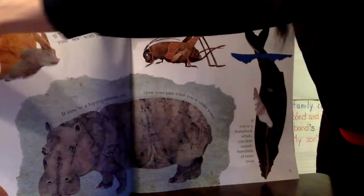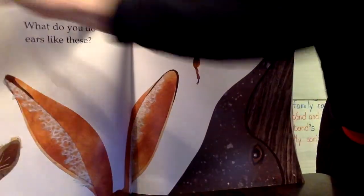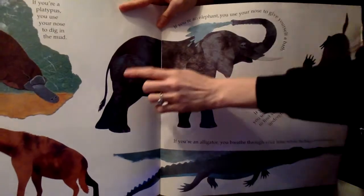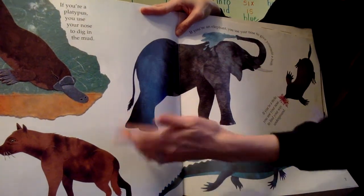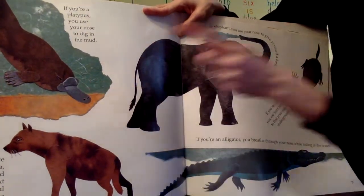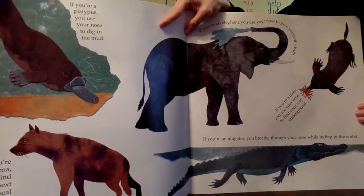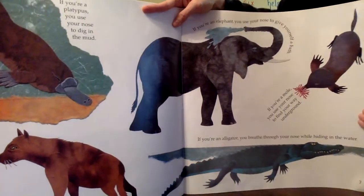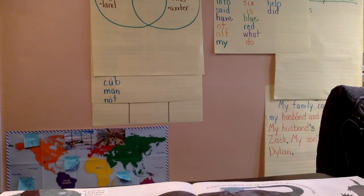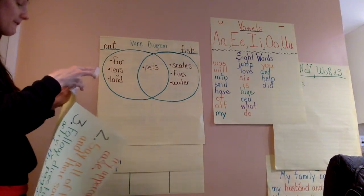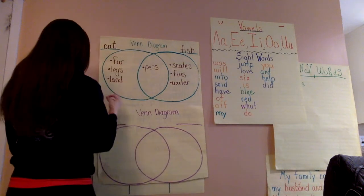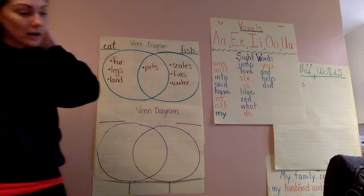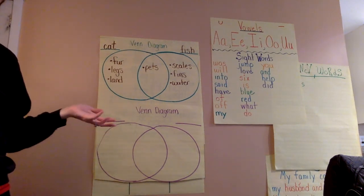The two animals I want to compare today for my Venn Diagram - I thought the platypus was interesting and I'd like to learn more about him. And I know from the introduction they told us we could learn more about these animals in the back. I want to learn more about the platypus and the mole, so I think I want to use those two to compare today. Remember the I do: I did a Venn Diagram comparing a cat and a fish, which are my pets. Now this is the We Do part - in class we would be doing this together.